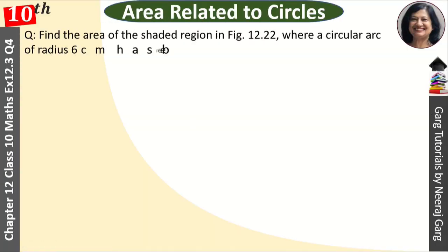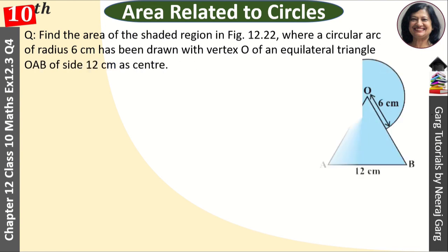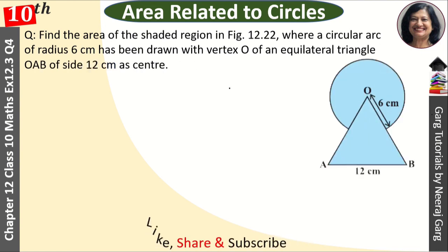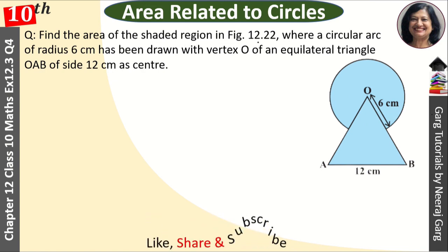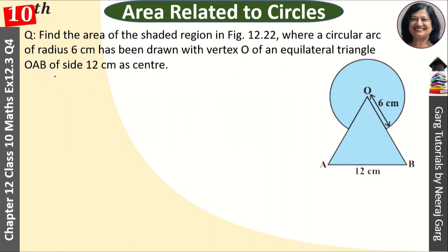Hi, this is Neeraj Garg and you are watching Class 10th Chapter 12: Area Related to Circles. Find the area of the shaded region in figure 12.22, where a circular arc of radius 6 cm has been drawn with vertex O of an equilateral triangle OAB of side 12 cm as center. This is the diagram given — this is a circle and this is an equilateral triangle, and we have a shaded region of area.